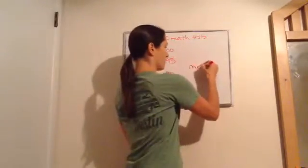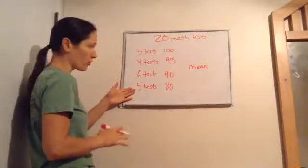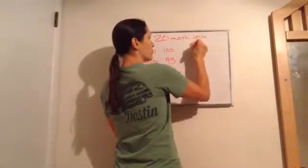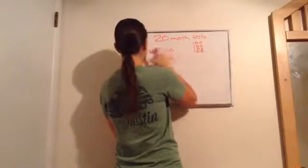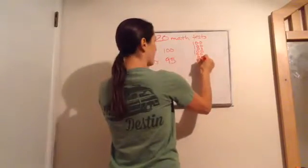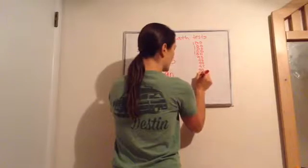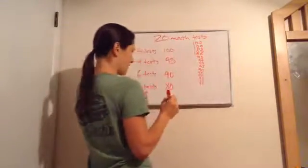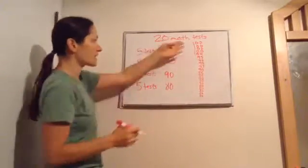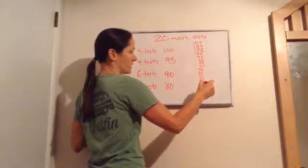This may look hard, but let's see what we're doing. Written out, it would be: 100 five times, then 95 four times, then 90 six times. And then five tests at 80 — so 80 five times. That accounts for all 20 tests: 5 plus 4 plus 6 plus 5 equals 20. Yes, it is 20 tests.